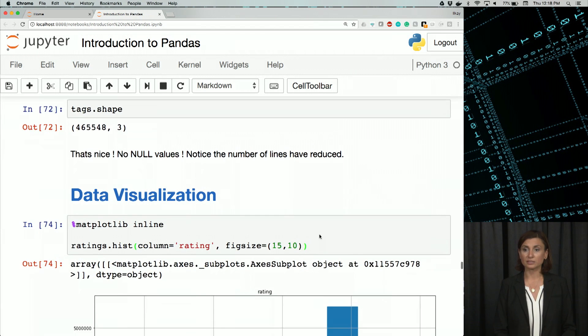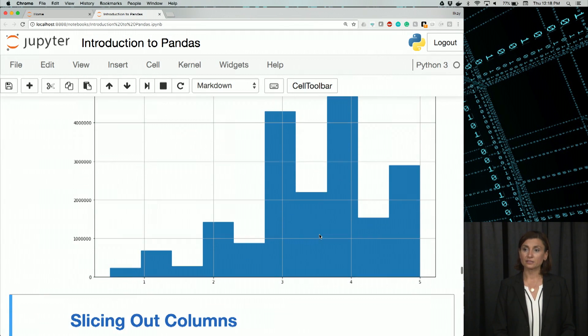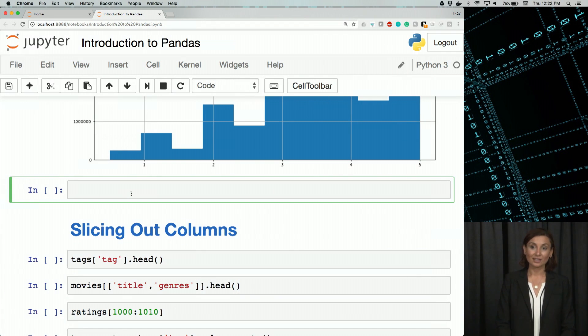I'm running this, and we'll see that a histogram was generated using this.